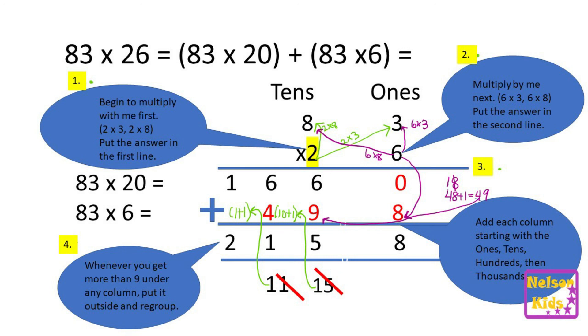So pay particular attention to your regrouping. Once you multiply a number and you realize it is more than nine, you have to automatically pull the skill of regrouping and apply it to the situation. So it is no longer focusing on just getting the digit in the column, but you must know when to regroup. This has been a short lesson from Nelson Kids. Join me next time.